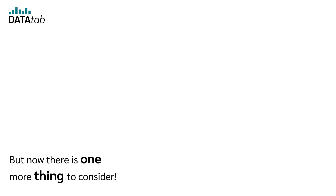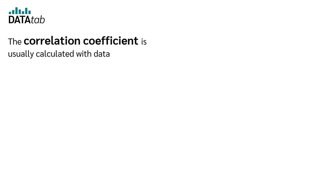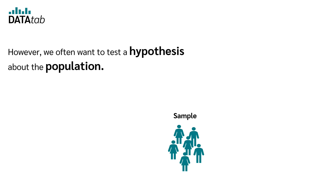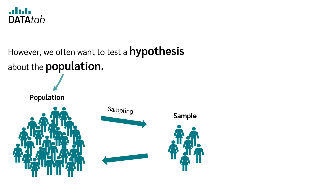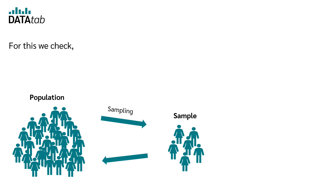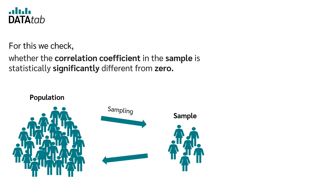But now there is one more thing to consider. The correlation coefficient is usually calculated with data taken from a sample. However, we often want to test a hypothesis about a population. In the case of a correlation analysis, we want to know if there is a correlation in the population, so we check whether the correlation coefficient in the sample is statistically significantly different from zero.